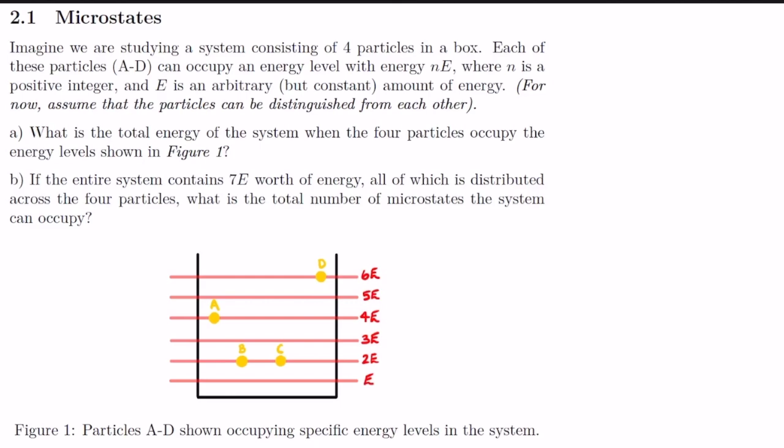Imagine we are studying a system consisting of four particles in a box. Each of these particles, a to d, can occupy an energy level with energy n*e, where n is a positive integer and e is an arbitrary but constant amount of energy. For now assume that the particles can be distinguished from each other. Part a: what is the total energy of the system when the four particles occupy the energy levels shown in figure one? Part b: if the entire system contains 7e worth of energy, all distributed across the four particles, what is the total number of microstates the system can occupy?